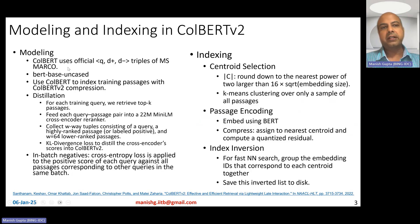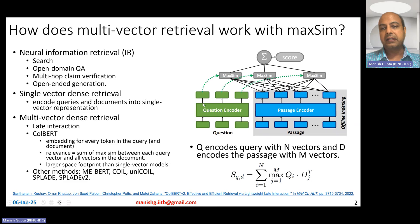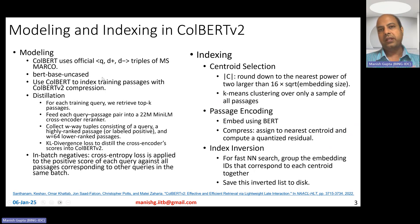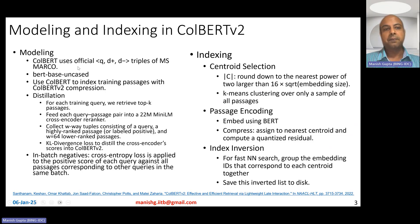ColBERT V2 uses a BERT-base uncased 12-layer encoder for both query-side and passage-side encoding. To train this encoder, you need labeled data. In ColBERT, they used query, positive document, and negative document triples from MS-MARCO. In ColBERT V2, they also start with ColBERT and essentially index training passages with ColBERT V2 compression.